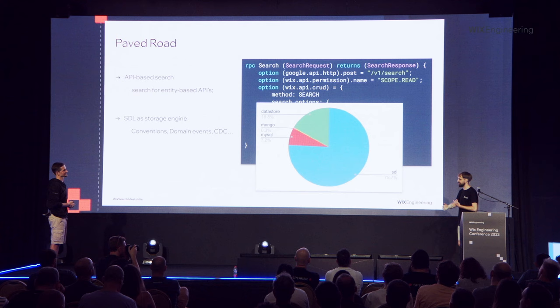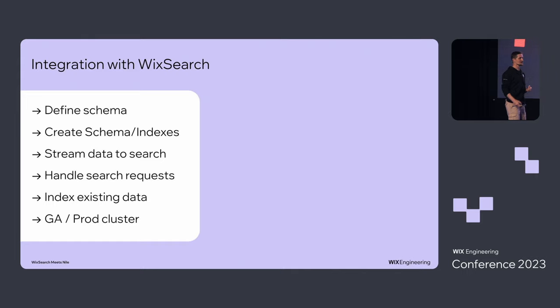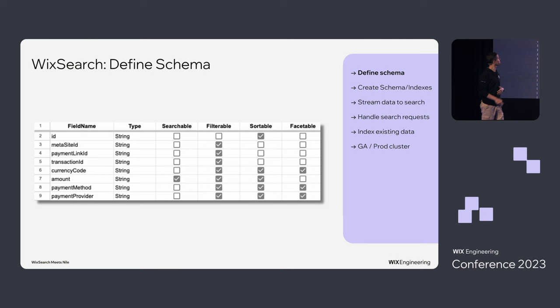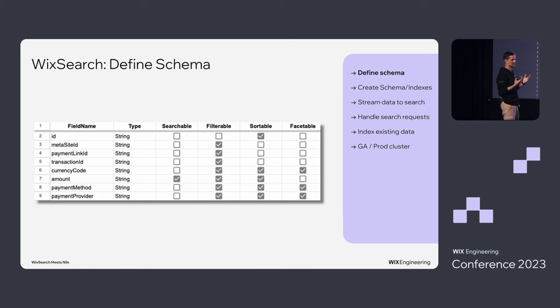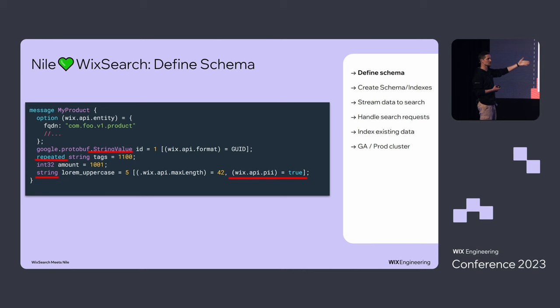How might this evolve? I want to walk through what it takes to integrate with search and see how Nile changes that. In search, a spreadsheet defines the schema — but in Nile, given we have an API, it turns out the API already contains quite useful metadata for search: types, formats, IDs as GUIDs, tags as string collections, PII fields marked as such. This gives us data to start from.